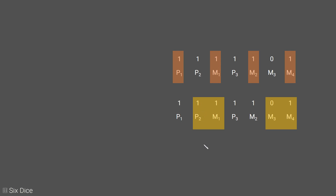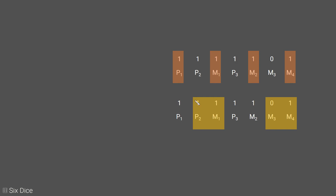Now let's check parity bit 2. We XOR message bit 1 with 0 with 1: those two XORs result in 1, then 1 XOR 1 gives 0. So our parity bit 2 should be 0, but it is given as 1. Therefore, an error is indicated by parity bit 2.